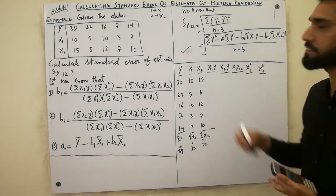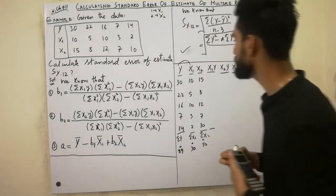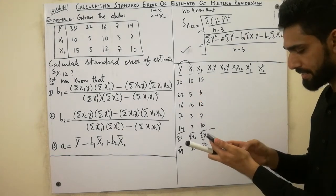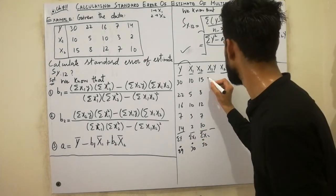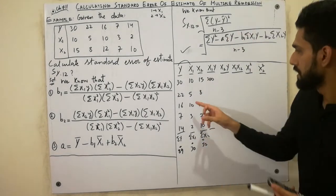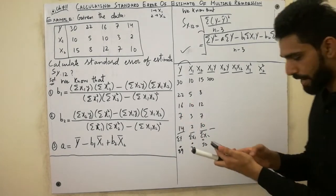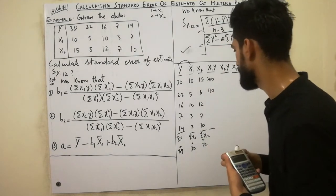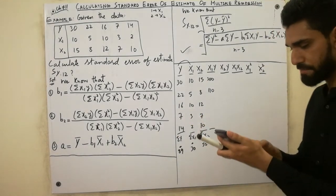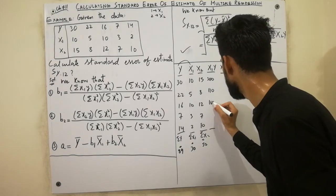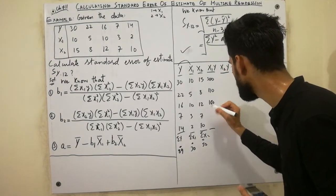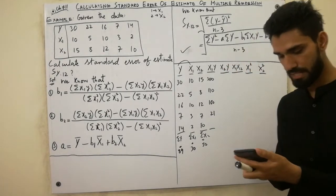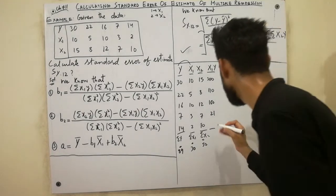Next we multiply to get x1y. For x1y we multiply each x1 by its corresponding y: 30 times 10 gives 300; 22 times 5 gives 110; 16 times 10 gives 160; 7 times 3 gives 21; and 14 times 2 gives 28.